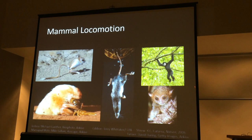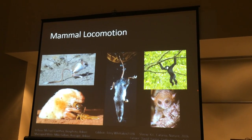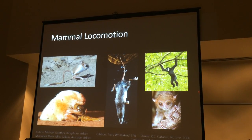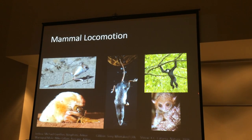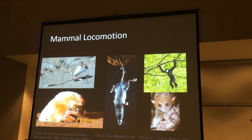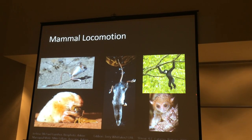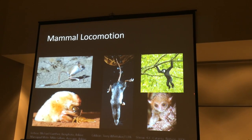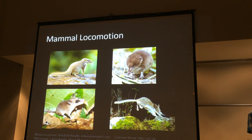Certain mammals, those smaller mammals, have adaptations that are just unmistakable. You obviously know what they're doing, such as this jerboa in the upper left that obviously jumps around, or this marsupial mole in the bottom left that is obviously a burrowing species.